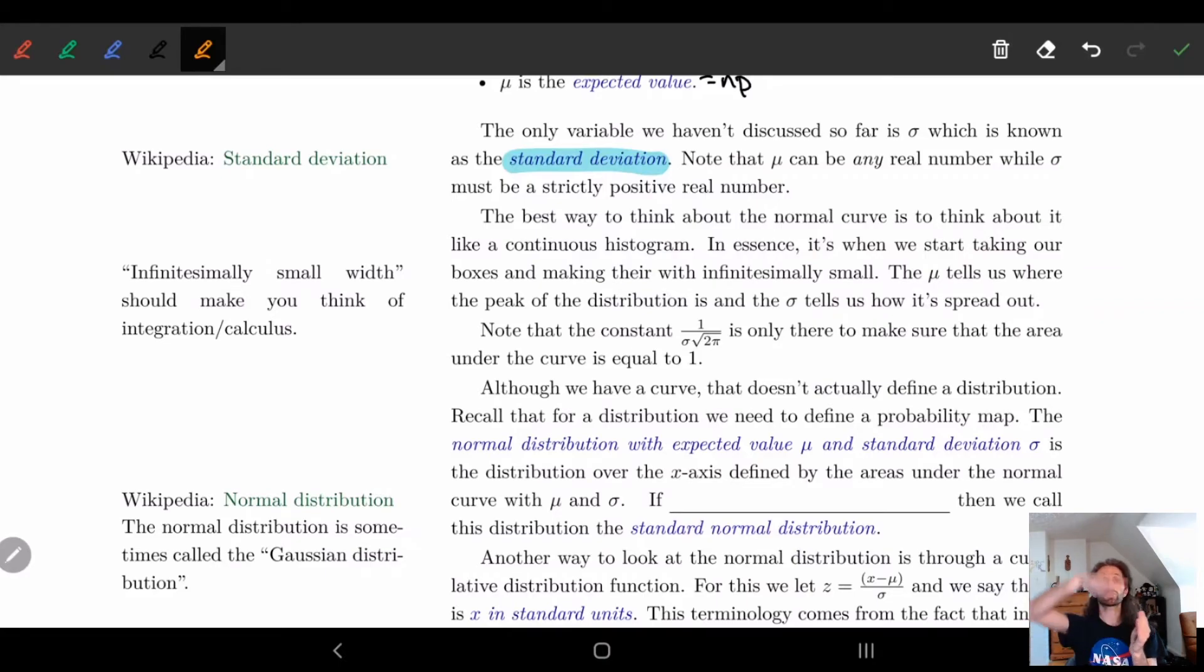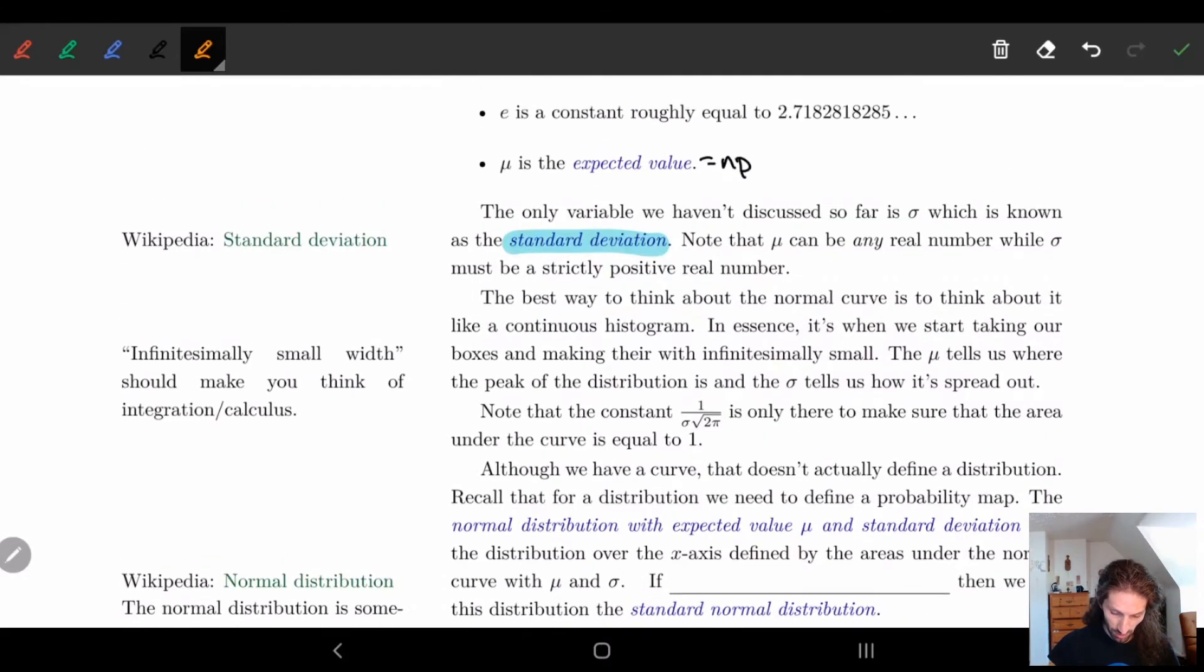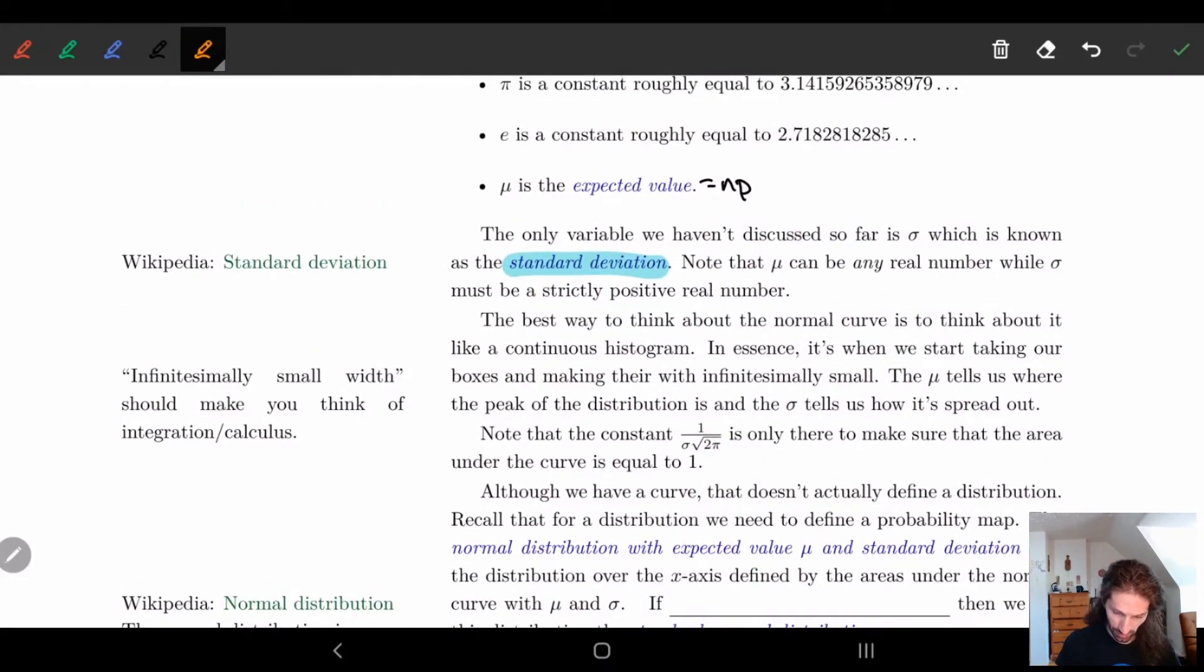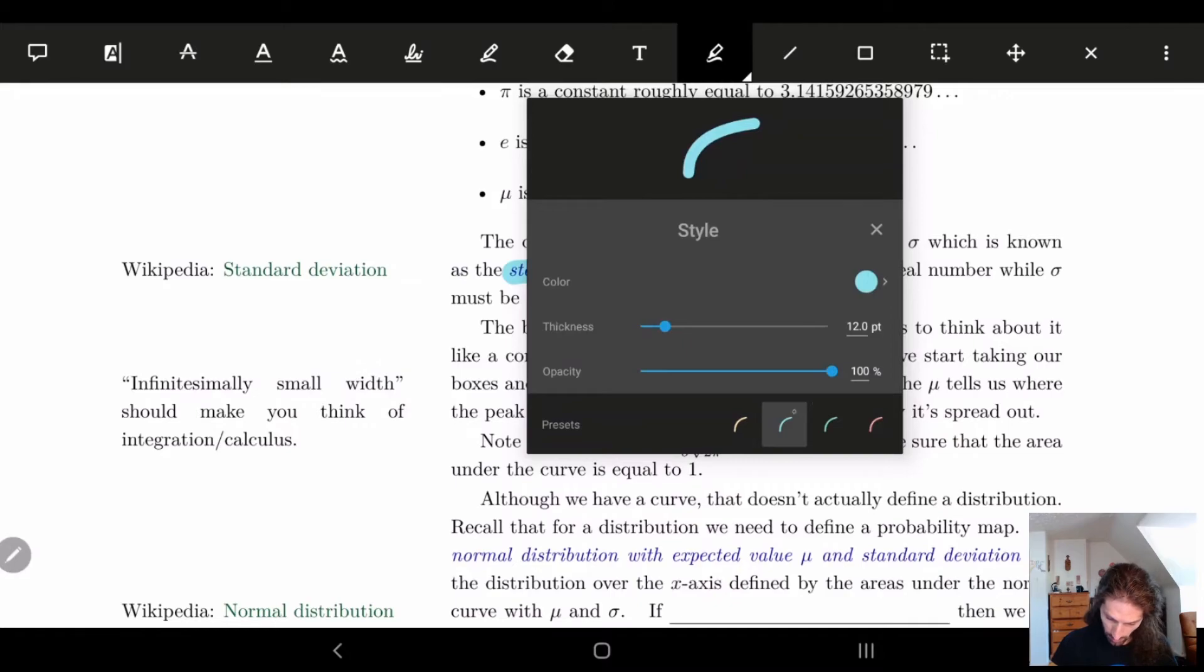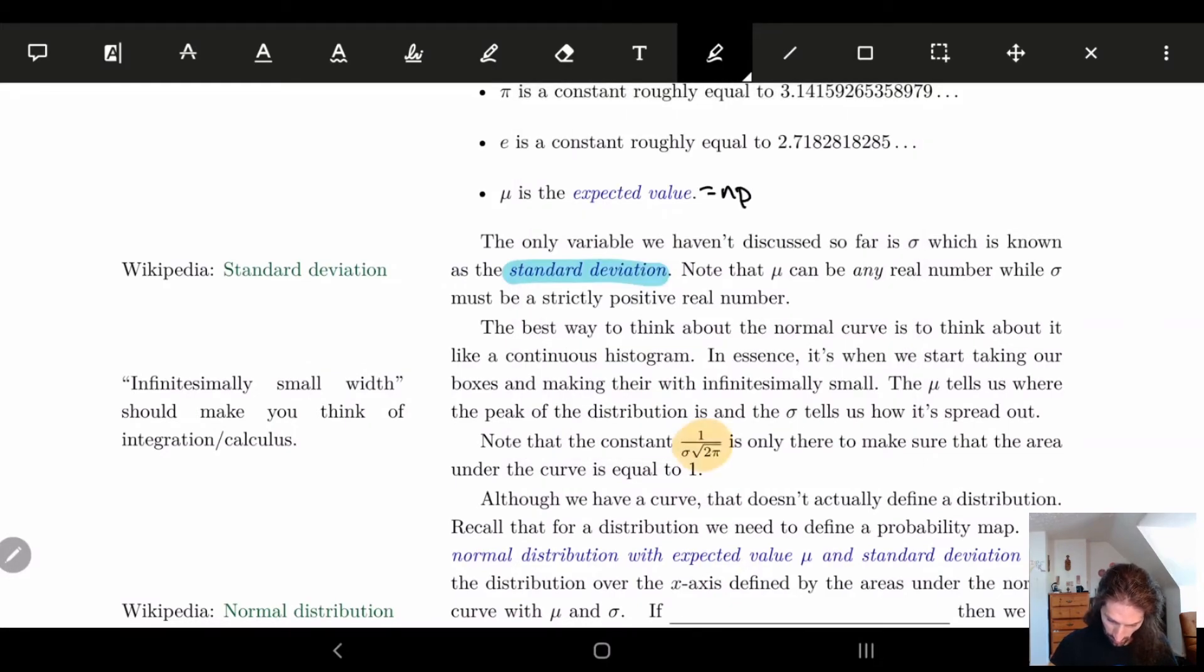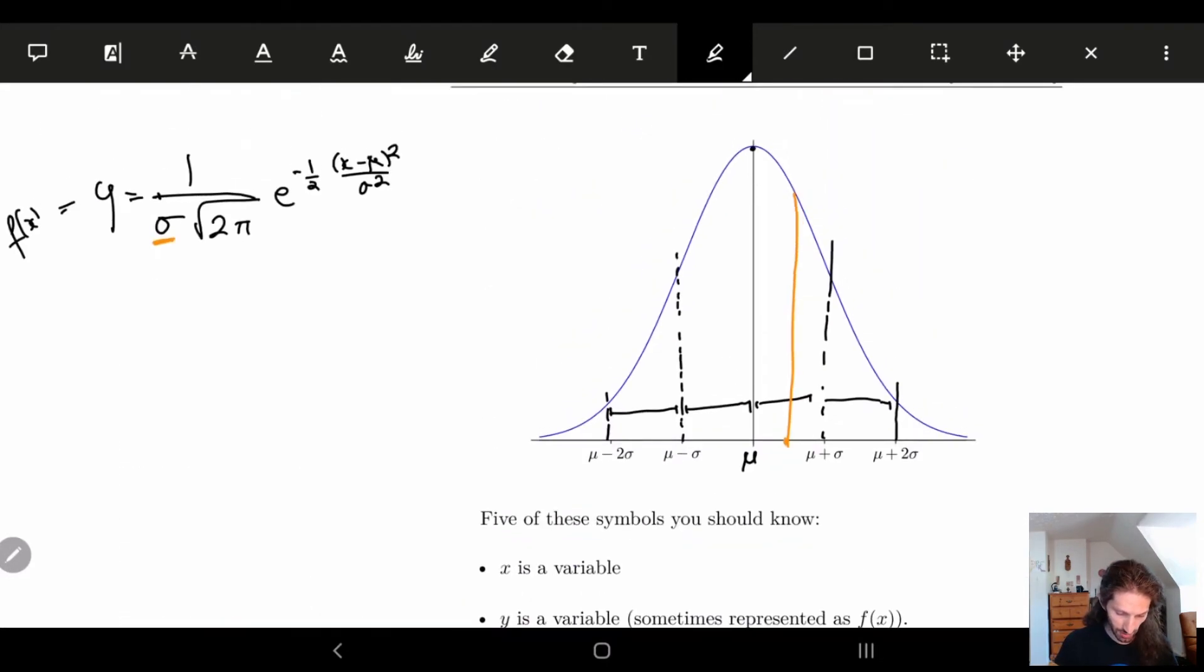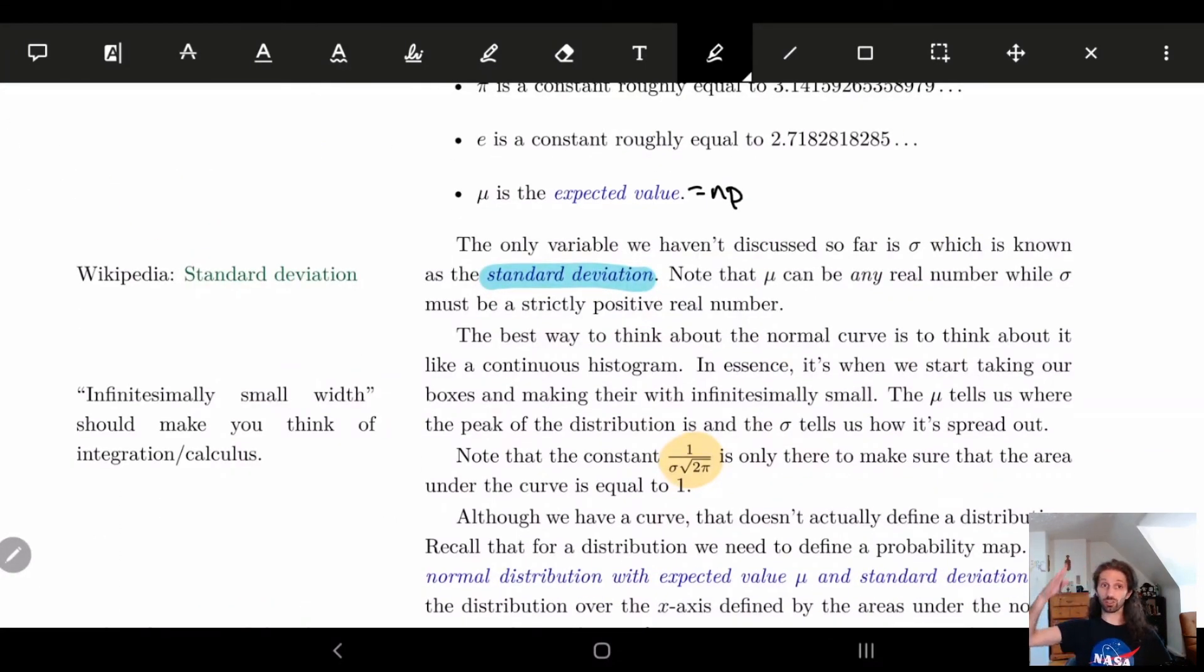So basically, what we have is the mu tells us how high it goes, the sigma tells us how far spread out it is. This little constant in front, this little thing here in front, this is there just to make sure that the area under the curve is equal to one.